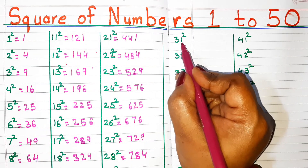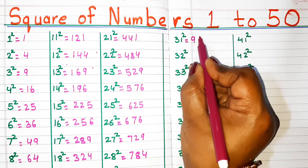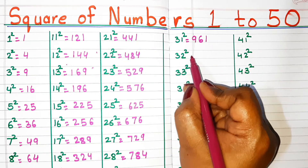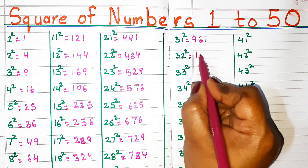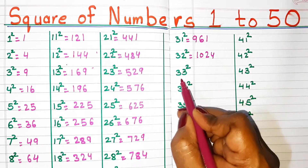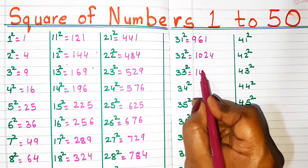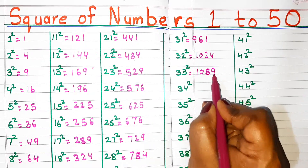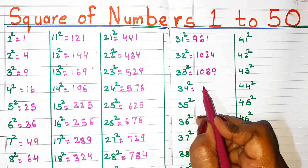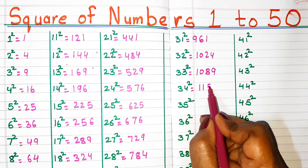Square of 31, 961. Square of 32, 1024. Square of 33, 1089. Square of 34, 1156.